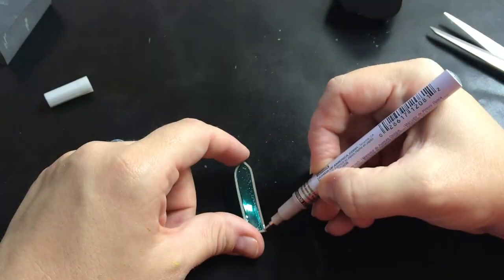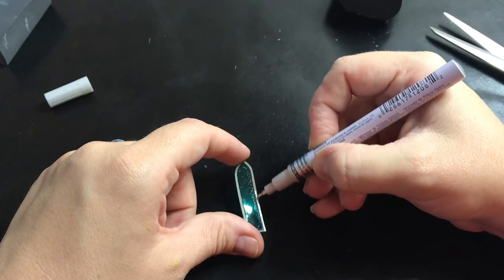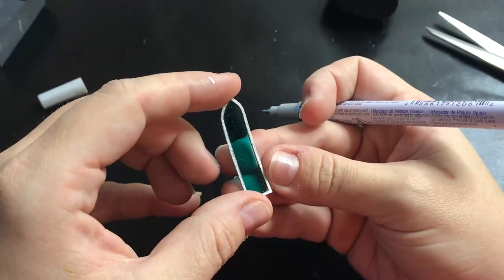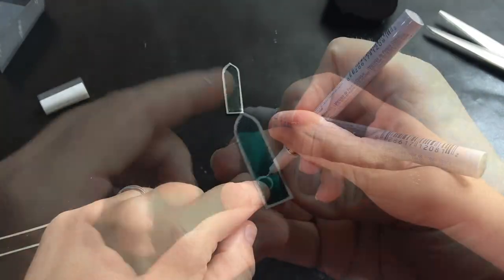But before I do that, I'm going to make those frames silver with this marker. This marker is fantastic for all these tiny silver details.